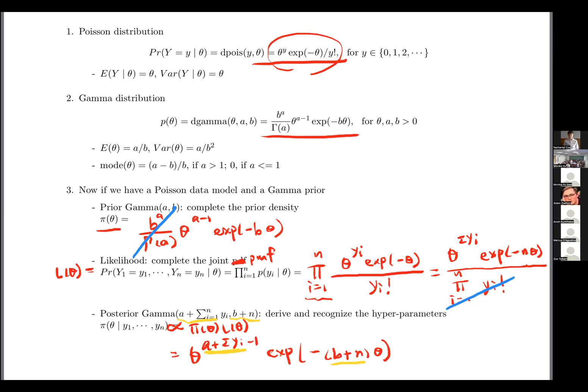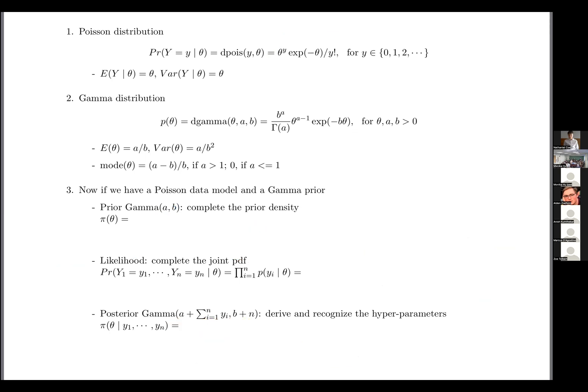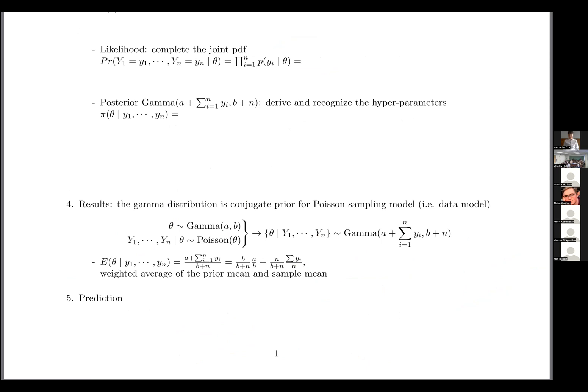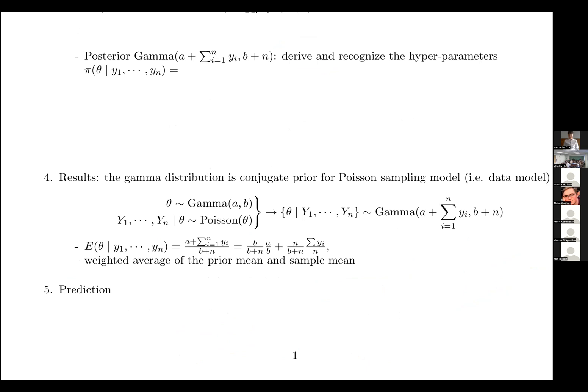This one is probably even easier than what we did for the normal case, and this is a commonly used conjugate result. If I'm working with count variables, and if I assume a Poisson distribution, a data model for them, then if I give a gamma prior to the parameter theta, I will arrive at a gamma posterior, because it's conjugate. So that's the main part for doing the derivation. And then of course there are some other stuff, like in item four, I show you once again that the posterior mean is a weighted average of the prior mean and the sample mean. This could be handy, I know homework two, I have one question for you to show that for the beta case. You can come to here if you want to get some hint about how to show that.